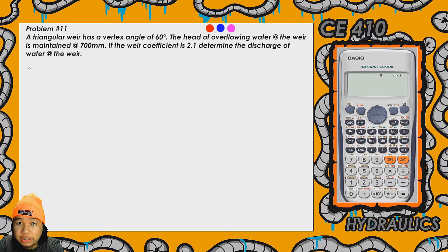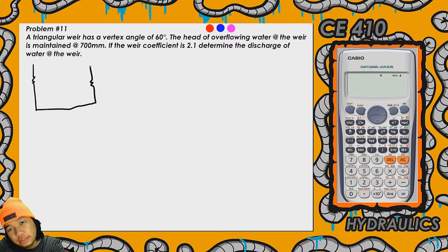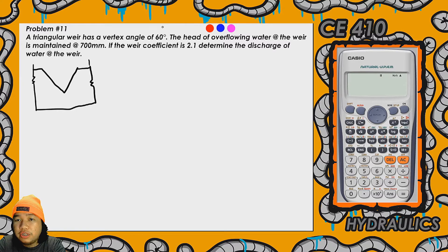So illustrate muna natin para mas maintindihan natin yung problem. Say merong section ng channel dito, ayan. So section lang siya at may installed na triangular or v-notch weir dun sa channel. So ayan, given na yung vertex angle which is 60 degrees. So yung vertex angle is yung angle kung saan ang opposite side niya is yung open na part ng weir or yung open side ng weir. That's theta is equal to 60 degrees.